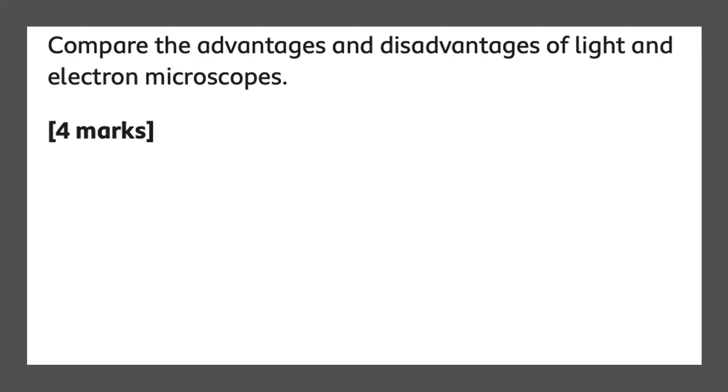Next and final question is a four marker. So it's asking you to compare the advantages and disadvantages of light microscopes and electron microscopes. So I'm going to state them over here. Electron microscopes have a higher magnification. That would be your first mark. And they have a higher resolution as well. That would give you two marks so far. But remember it's four marks. It's asking you for four answers.